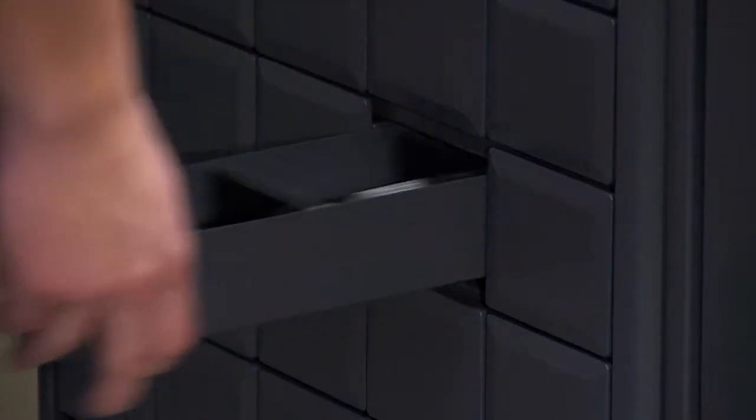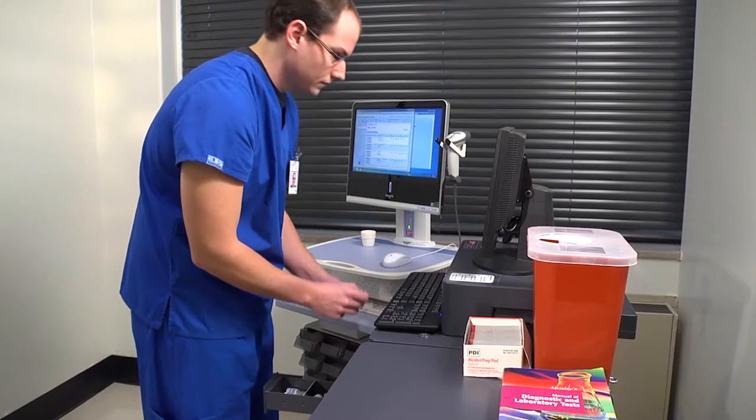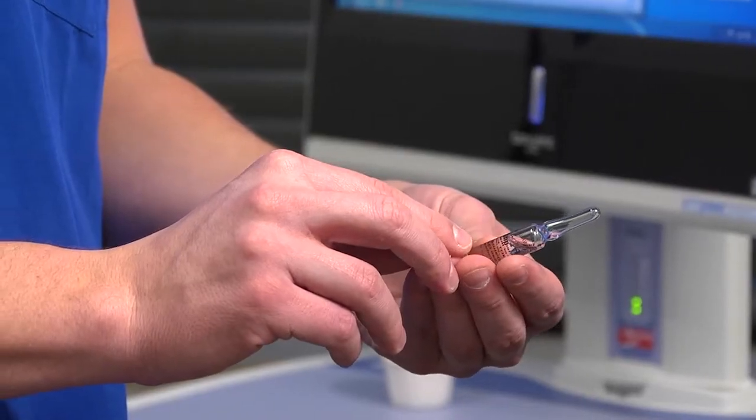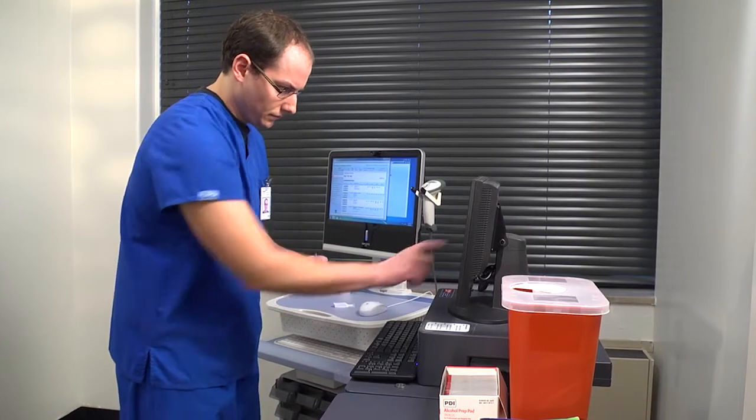Obtain an ampoule of the prescribed drug from the dispensing system. Compare the name of the drug on the label of the ampoule with its name in the MAR. Next, check the expiration date and drug dose on the label of the ampoule.